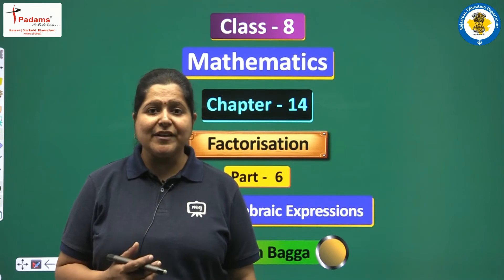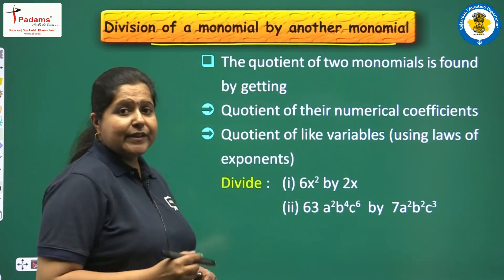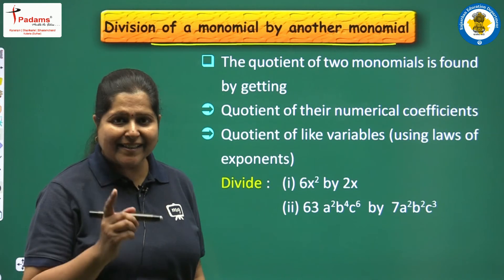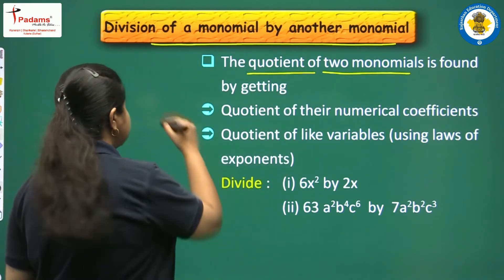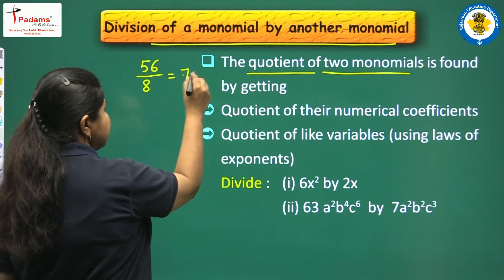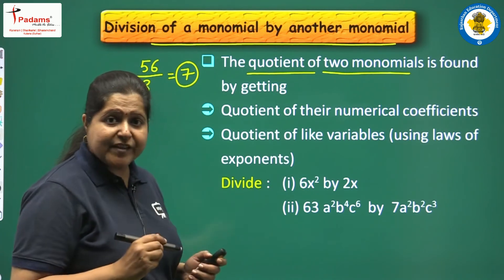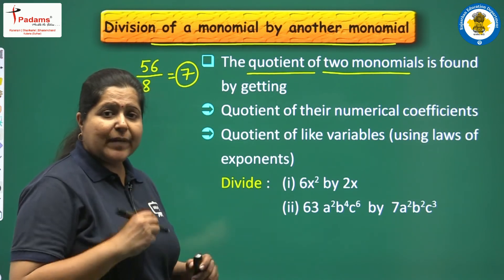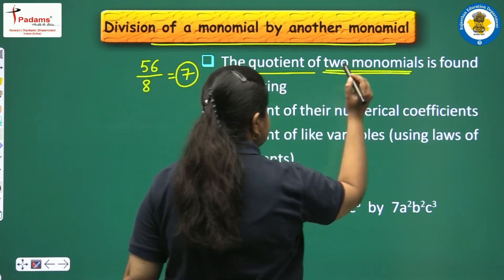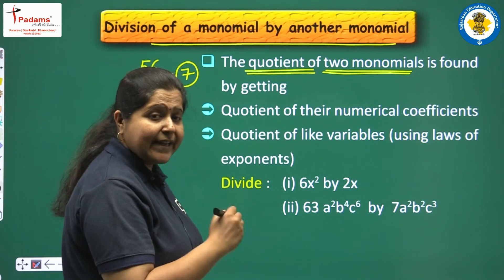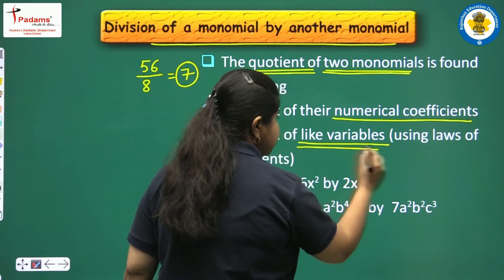We will start with the very simplest expressions which are the monomials — division of a monomial by another monomial. We know that a monomial is an algebraic expression with one single term. As we divide one algebraic expression by the other, the answer that we get is known as the quotient. We find it by getting the quotient of their numerical coefficients and quotient of like variables.